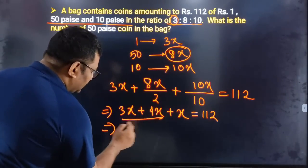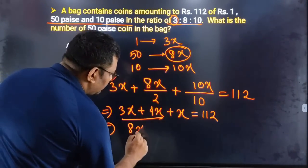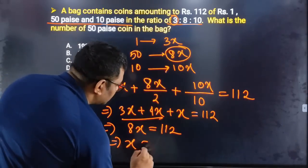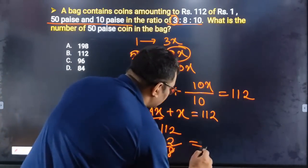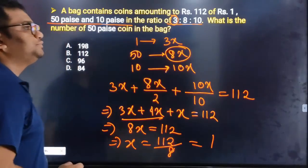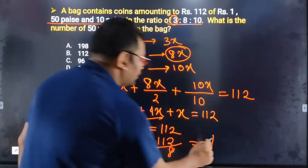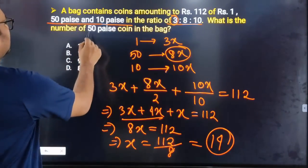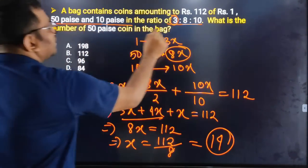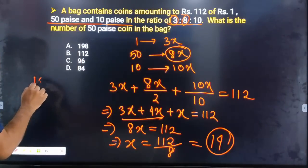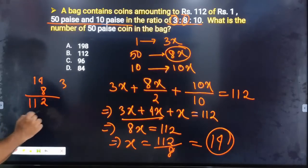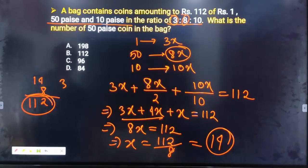Here we have 7x, which was about 8x, so 8x will be equal to 112. Therefore x will be equal to 112 divided by 8, which gives 14. x is equal to 14, which means 5x is equal to 5 times 14, and 8 into 14 multiplied equals 112.